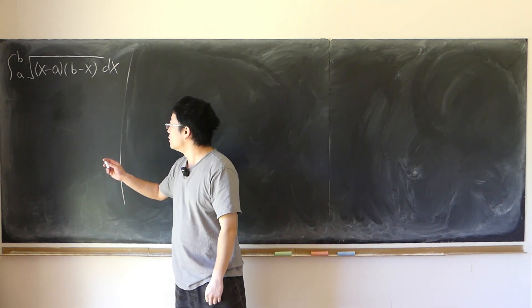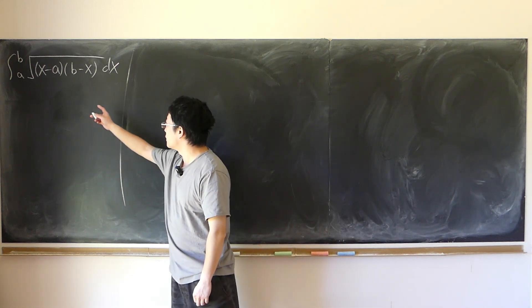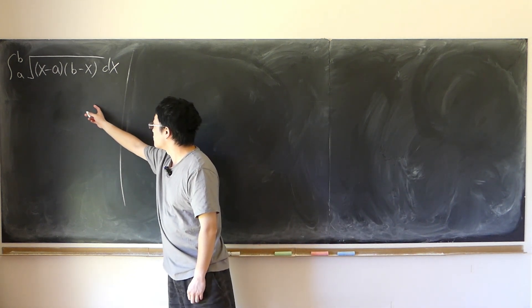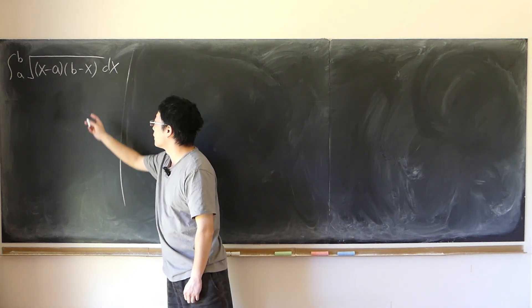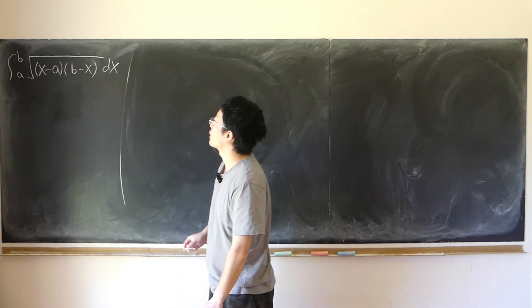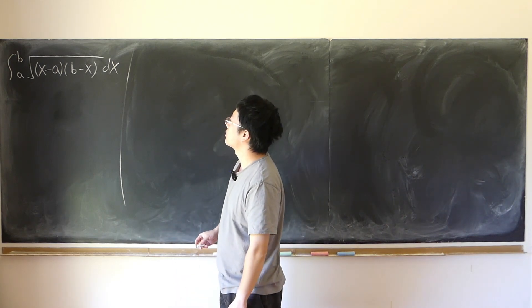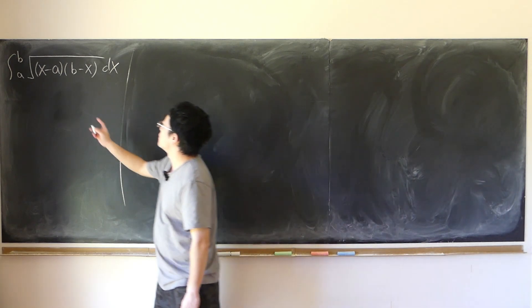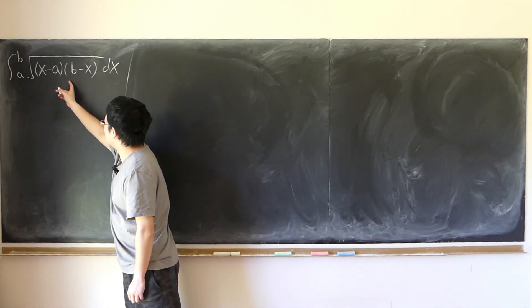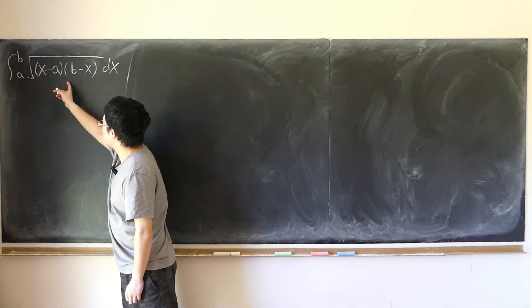The integral from a to b of the square root of (x minus a) times (b minus x) dx. First of all, is the inside of the square root bigger than or equal to zero?